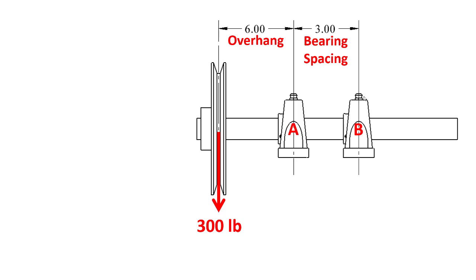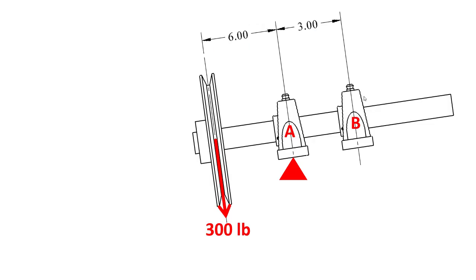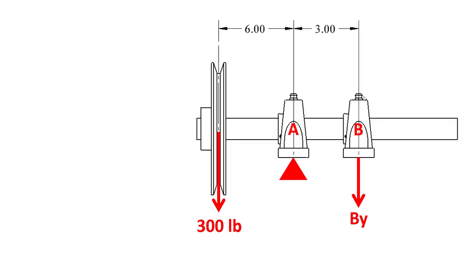The best way to understand the calculation is to realize that bearing A is acting like a fulcrum on a teeter-totter. The 300 pound load which is overhanging by 6 inches will want to tip the teeter-totter this way, which means a reaction force at bearing B acting downward will have to develop to keep the system from tipping.